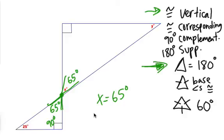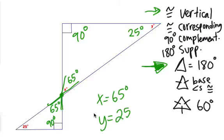Then we use the triangle angle sum again, because now we know 65 and 90 in the top triangle. That means Y has to be 25 to equal 180. We used two tools: triangle angles add up to 180, and vertical angles are congruent.